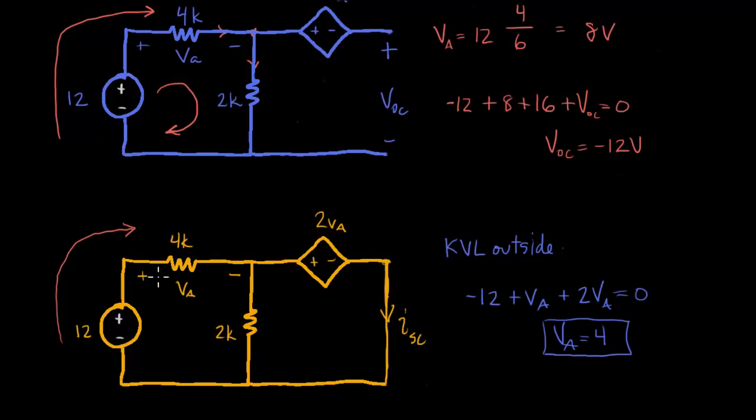Okay. So now I know VA here, which means I can calculate this current. So we need to figure out what ISC is. We could try doing some KVL equations. I think that it would probably be not a bad idea to look at this node right here.